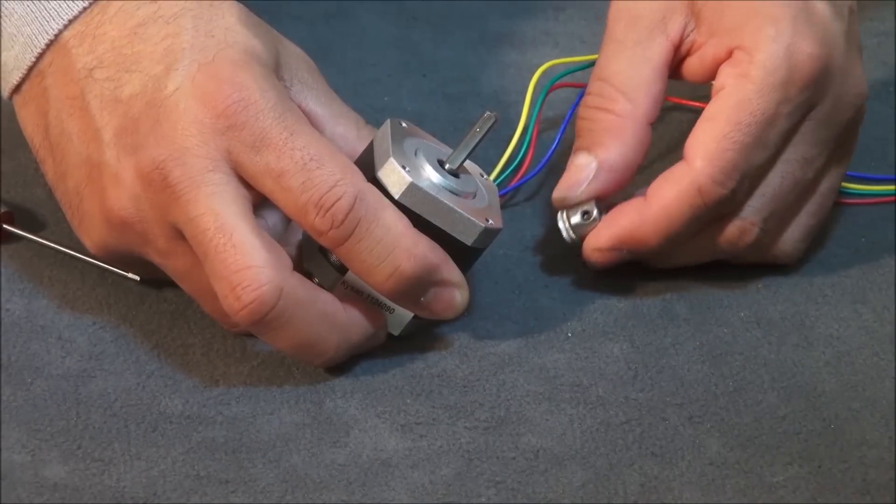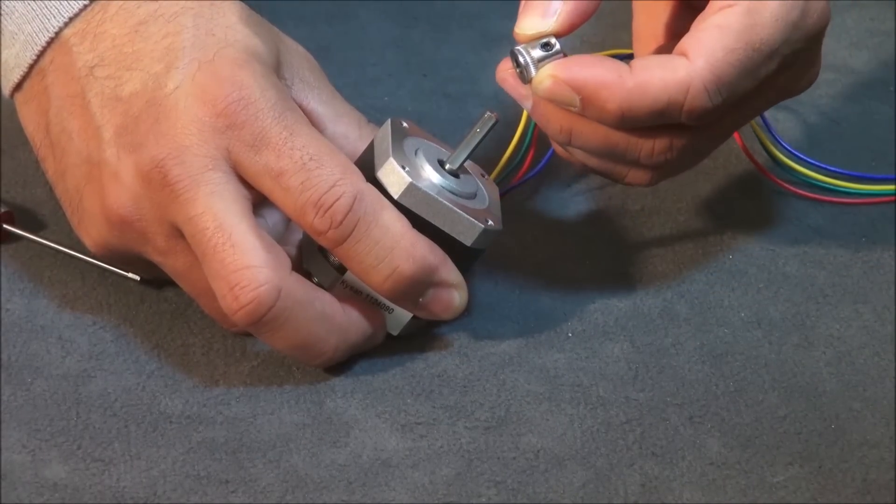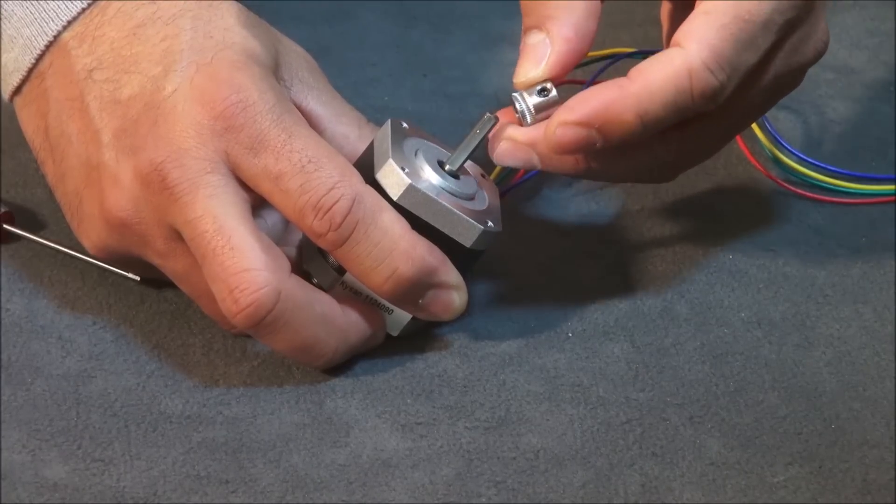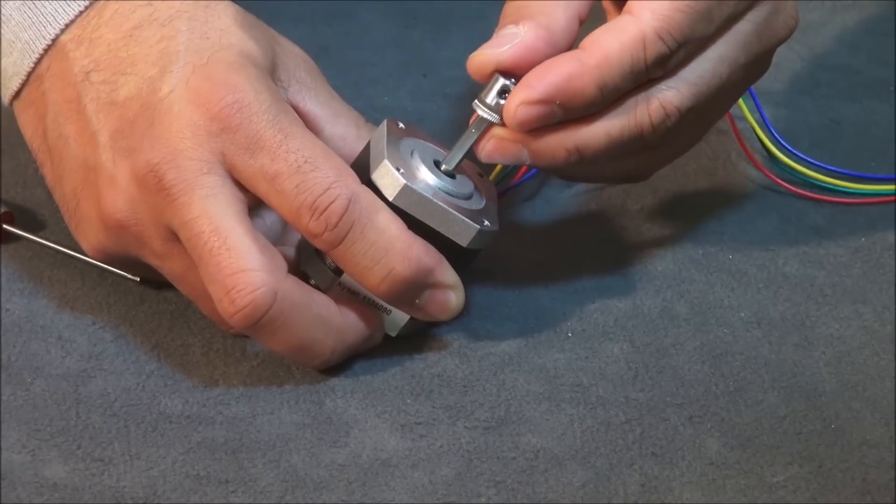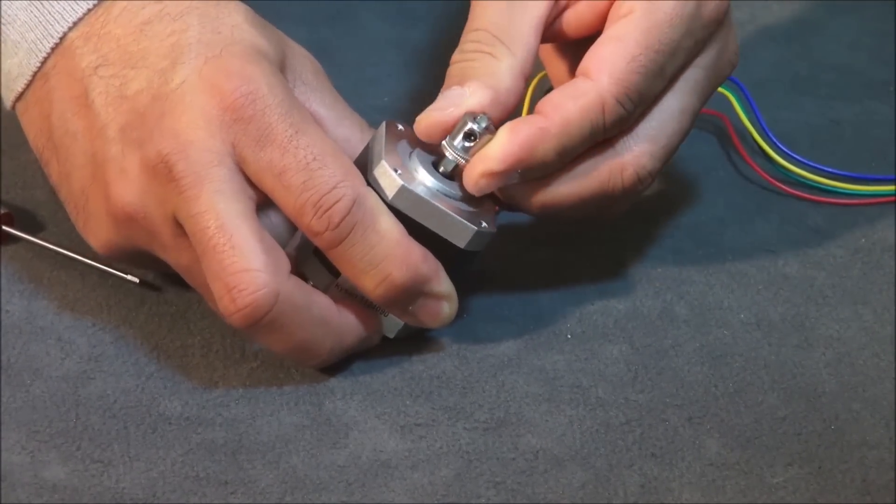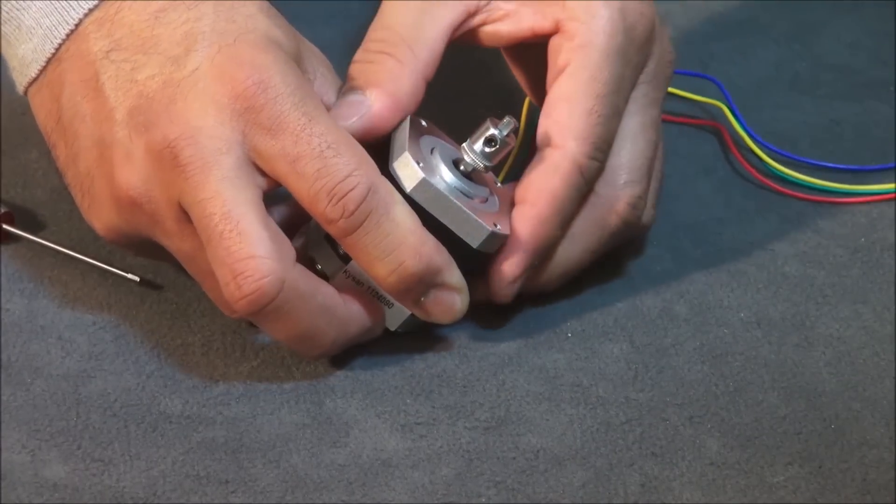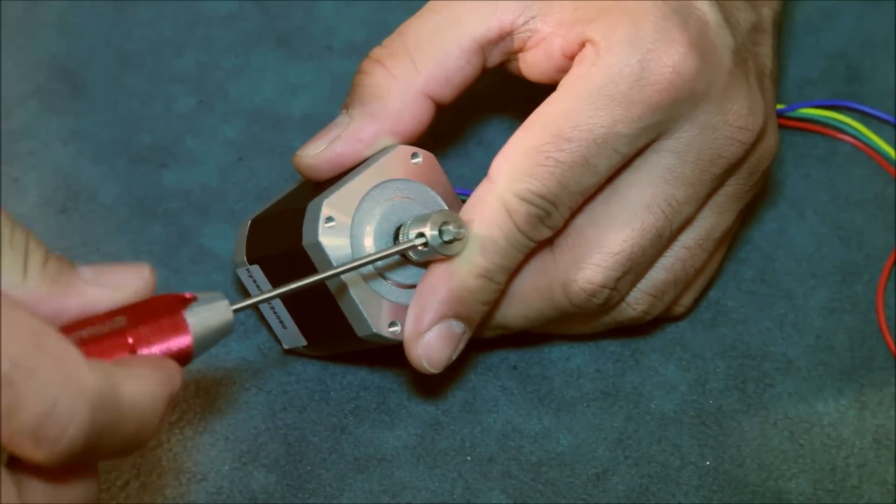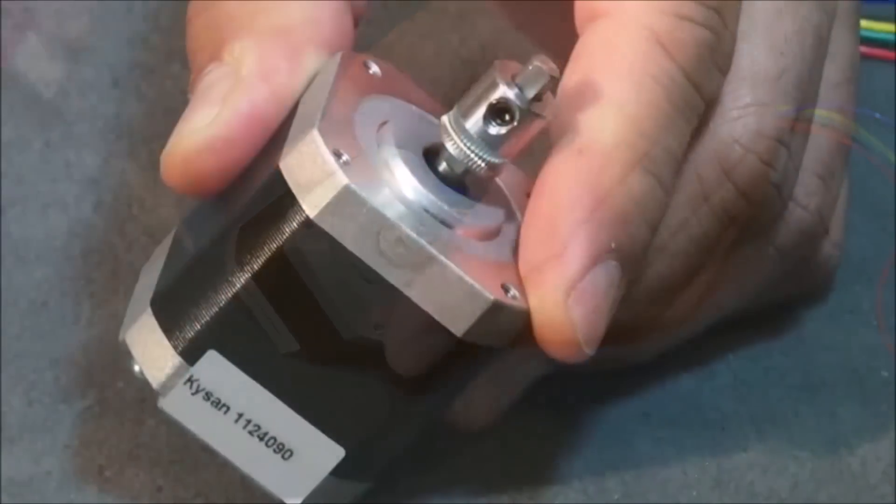Now we're going to assemble the stepper motor for your extruder. The teeth of your pinion are going to go to the bottom, and you want to align the allen screw with the flat side of your shaft. I'm going to put it down roughly about there. Lightly tighten it. You may need to adjust this later in the build, so we'll just keep it there for now.